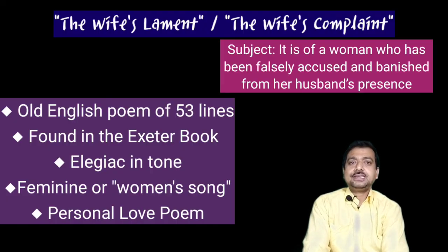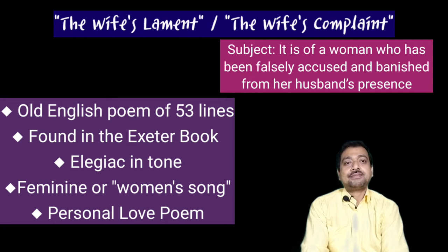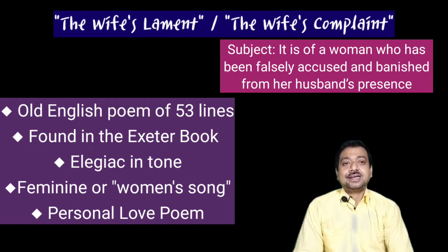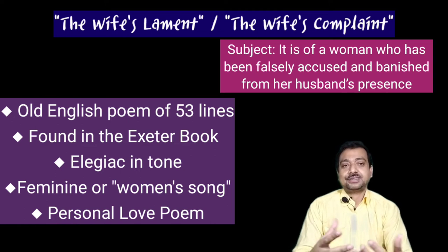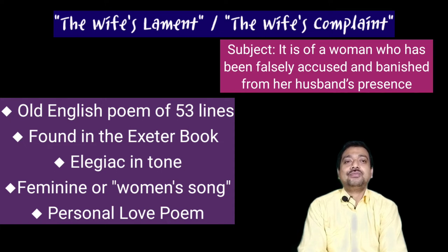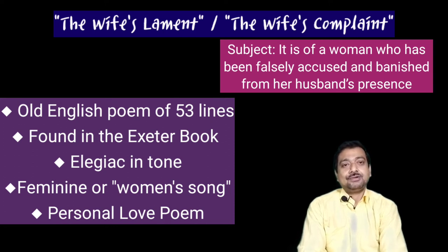The Wife's Lament, or Wife's Complaint, survives in only 53 lines and is found in the Exeter Book. It is generally treated as an elegy in the manner of Germanic women's songs — a kind of feminist voice with a more personal tone. It is the voice of a woman who has been falsely accused and banished from her husband's home, and in this lamentation the woman complains. It is a very worthy reading — you must go through a translation of this poem; it will interest you much.